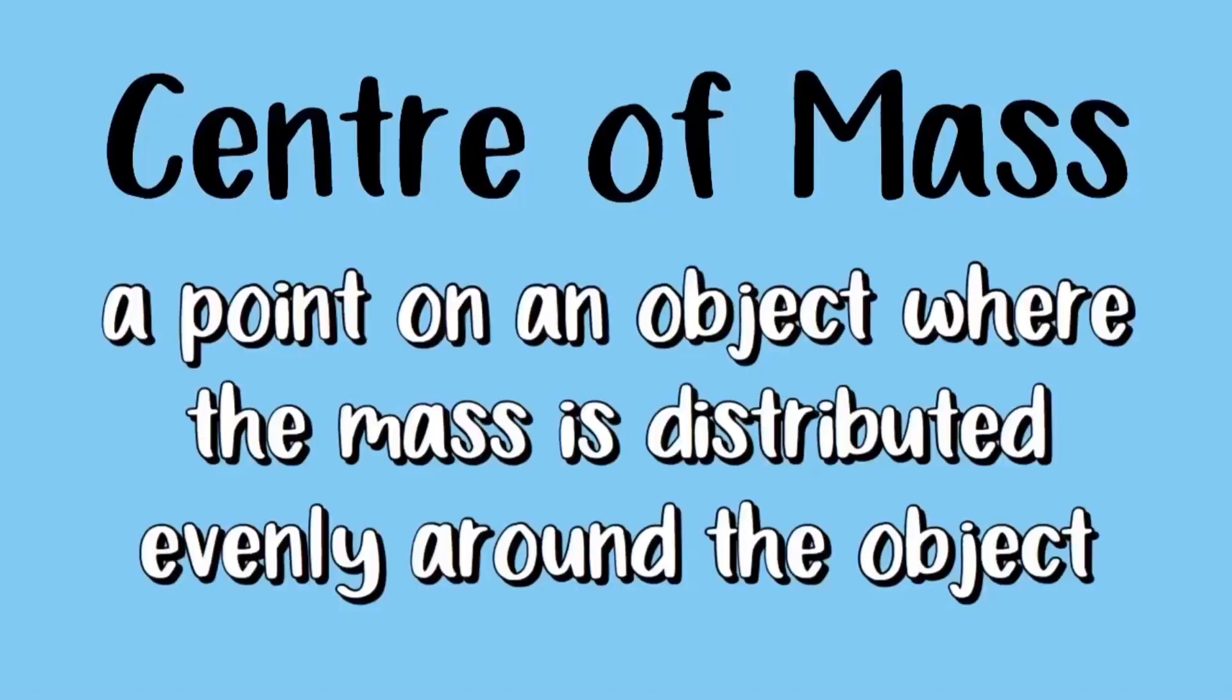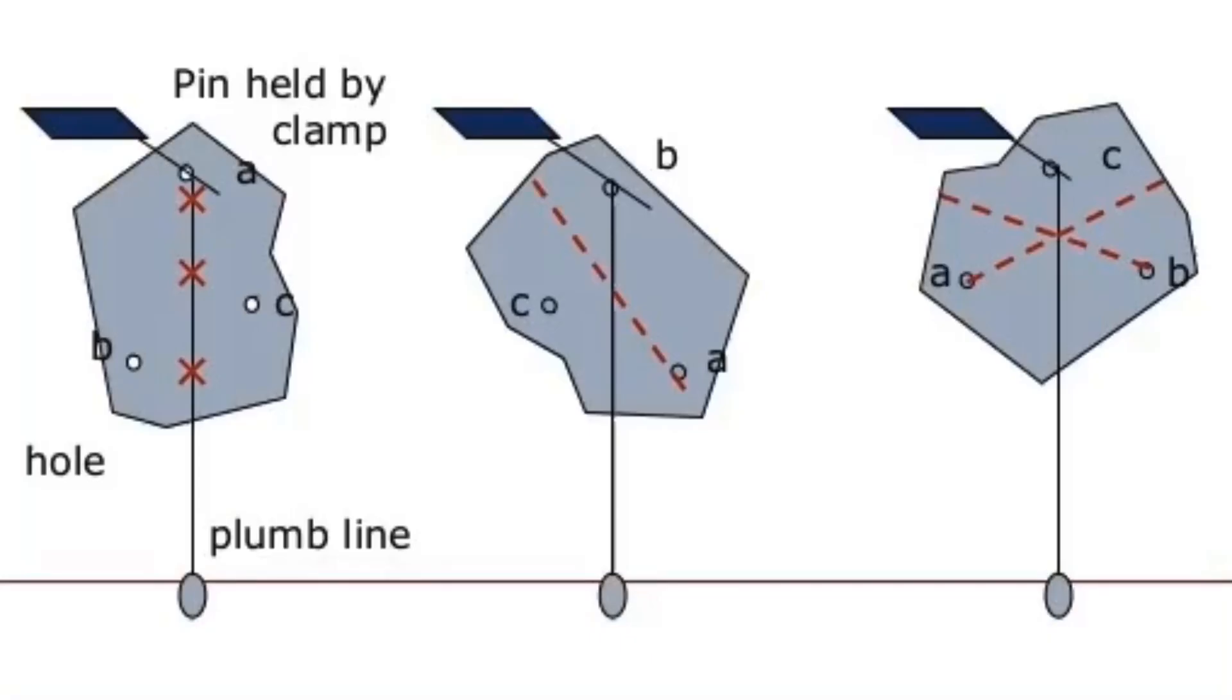Now let's move on to the center of mass. The center of mass is a point on an object where the mass is distributed evenly around the object. We can find the center of mass of an object using a plumb line as shown in the image.